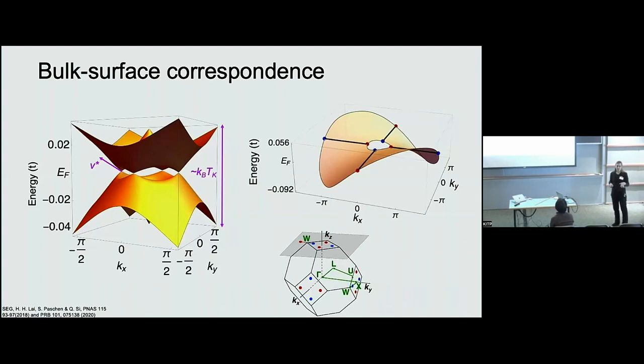So if you do annihilate the nodes at W what you get is a kind of trivial Kondo insulator in the system, which is important for a little later when I go to the nonlinear optical signature part of this talk.